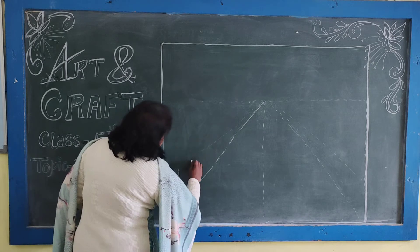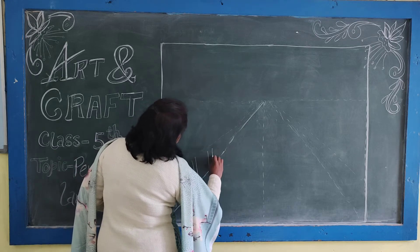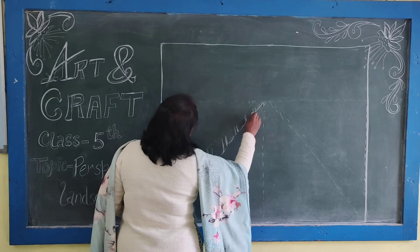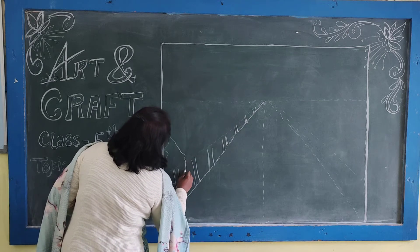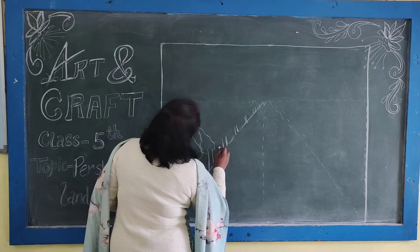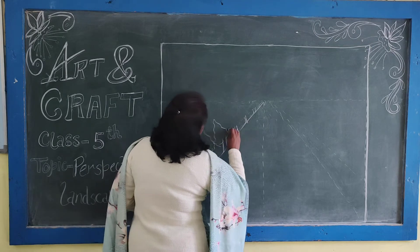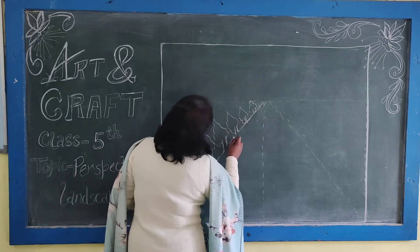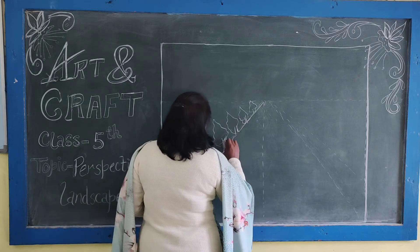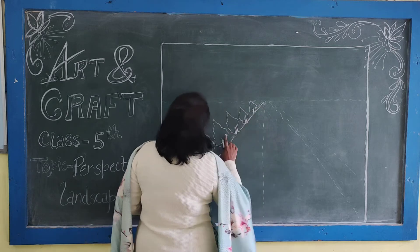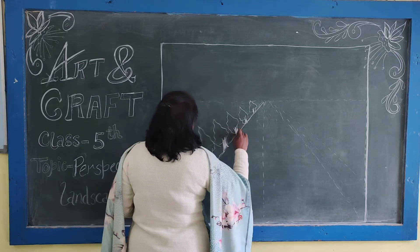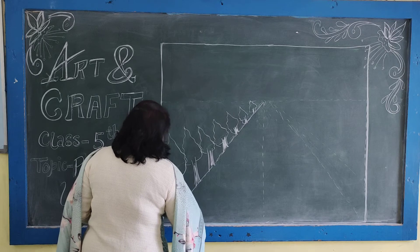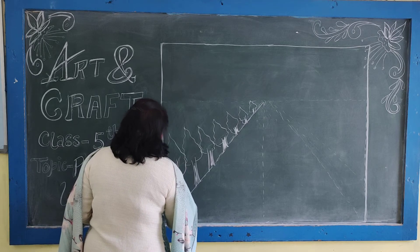First swing, second swing, third swing, fourth — and again, this is the borderline. These are the tree shapes. In this perspective picture, we always draw trees in a vertical way.